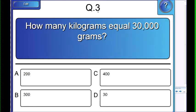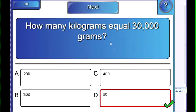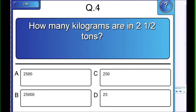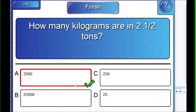Question number three. How many kilograms equals 30,000 grams? 30 or 300? B or D? B or D or B or D? You say D? You got it correct. Good job. And last question. How many kilograms are in two and a half tons? Ooh, if I guess I might get it wrong. But I know about two and a half pounds is one kilogram. Let's go with 250. 250? 2,500 kilograms are in two and a half tons. Good job.